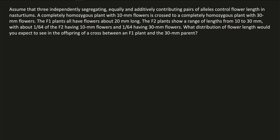Alright, so the following question has to do with additive genes, but this time we're not going to do a regular parent F1 or F2 cross — we're going to cross the F1 back to their parents. The question says to assume that three independently segregating, equally and additively contributing pairs of alleles — three pairs of alleles — control flower length in nasturtiums.